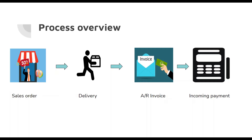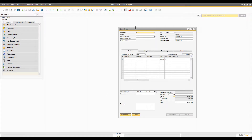Then you prepare the whole package, put it on the delivery document, and ship the product from your warehouse to the customer's address. After shipping, you expect payment from the customer, so you make an AR invoice. To accept and record the payment in SAP Business One, you create an incoming payment as well. This is the whole process of the sales module.